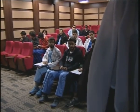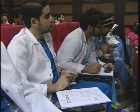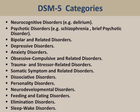DSM-5 categories include: neurocognitive disorders (e.g., delirium), psychotic disorders (e.g., schizophrenia, brief psychotic disorders), bipolar-related disorders, depressive disorders, anxiety disorders, obsessive-compulsive and related disorders, trauma and stressor-related disorders, somatic symptom and related disorders, dissociative disorders, personality disorders, neurodevelopmental disorders, feeding and eating disorders, elimination disorders, and sleep-wake disorders.